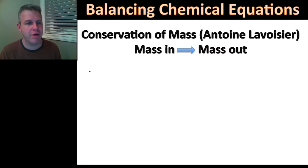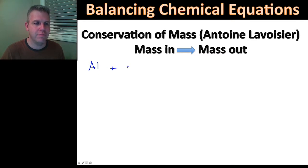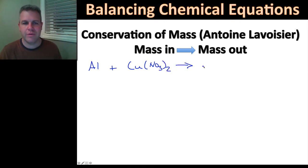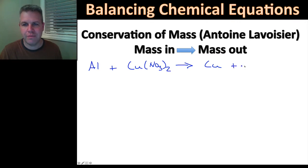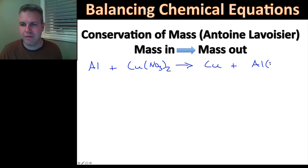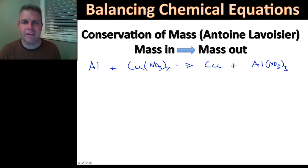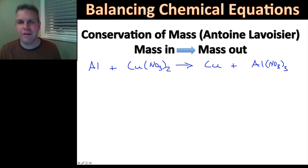The last example I'm going to show you contains a polyatomic ion. I'll start with aluminum plus copper(II) nitrate, Cu(NO₃)₂. That is going to yield — since it's a single replacement, aluminum replaces the copper — copper on its own. Metals can stand on their own; they're not diatomic. Plus aluminum nitrate.